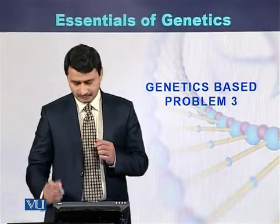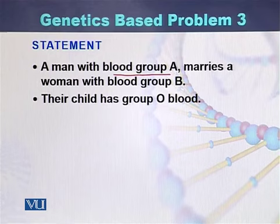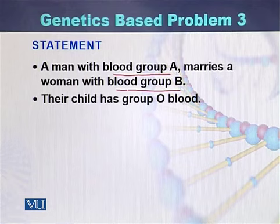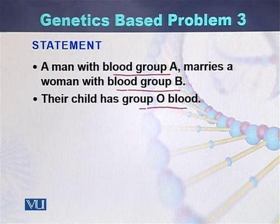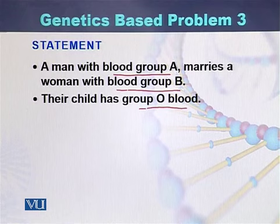Genetics based problem 3. In this problem, a man with blood group A marries a woman with blood group B. The blood group of the father is A and the blood group of the mother is B. Their child has blood group O. So how is this possible? We have to figure out how a man with blood group A and a woman with blood group B can have a child with blood group O.